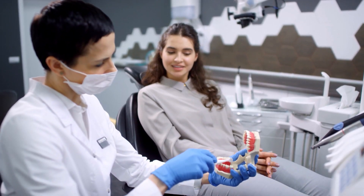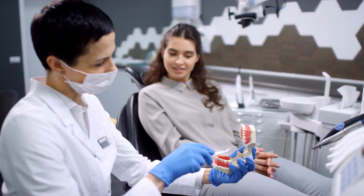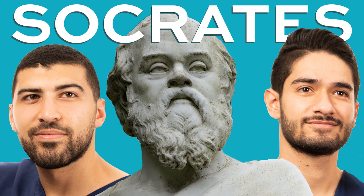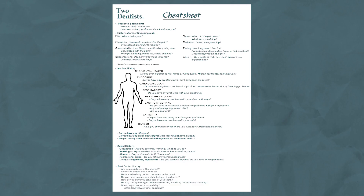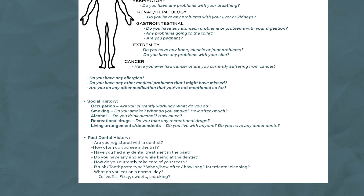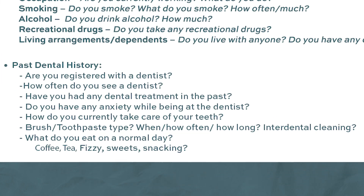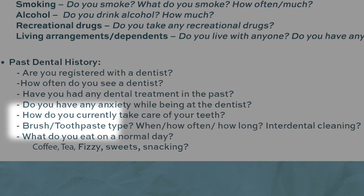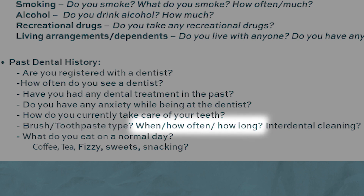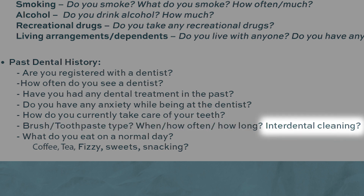Step one is to gather information. Before you start to teach the patient on how to look after their oral health, you need to establish how much they already know. We like to include asking the patient about their oral health regime in the past dental history section, where we'd find out the type of brush they use, the type of toothpaste they use, when and how often they brush and for how long, and finally if they use any interdental cleaning aids.